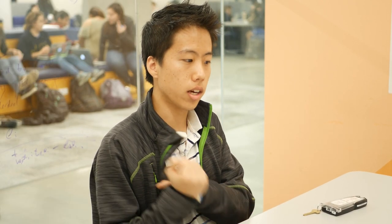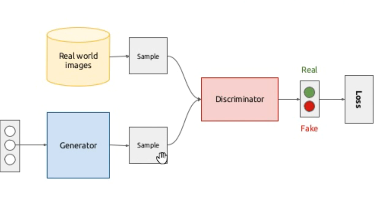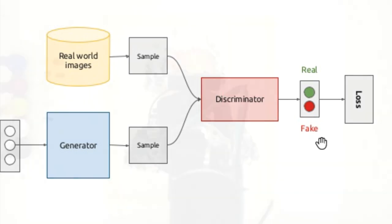What I want to build is a model called a generative adversarial network. There are two components to it: the generator and the discriminator. The generator tries to create example stories and sentences, while the discriminator looks at either a generated story or a real story and determines which one was generated and which one was written by a person.